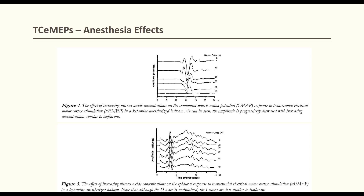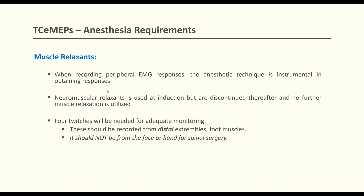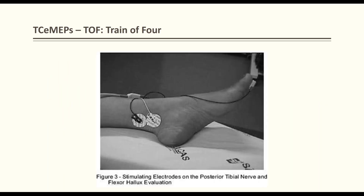Regarding anesthesia effects on muscle relaxation: when muscle relaxants wear off, the face recovers first, then the hand, then the foot — because blood supply to the face is highest. When doing train-of-four to check neuromuscular blockade levels, measure from the foot, not the face. You can stimulate the posterior medial malleolus and record from foot muscles. If the threshold is above 25–30 milliamps for a response, this indicates inadequate train-of-four.